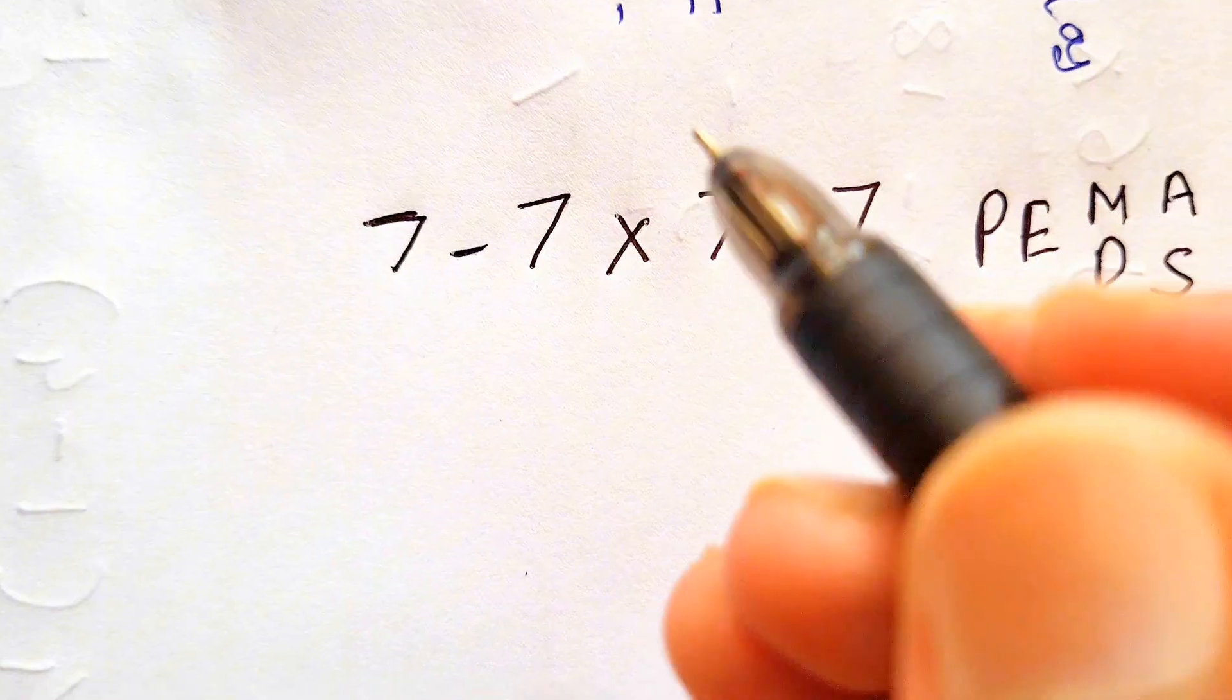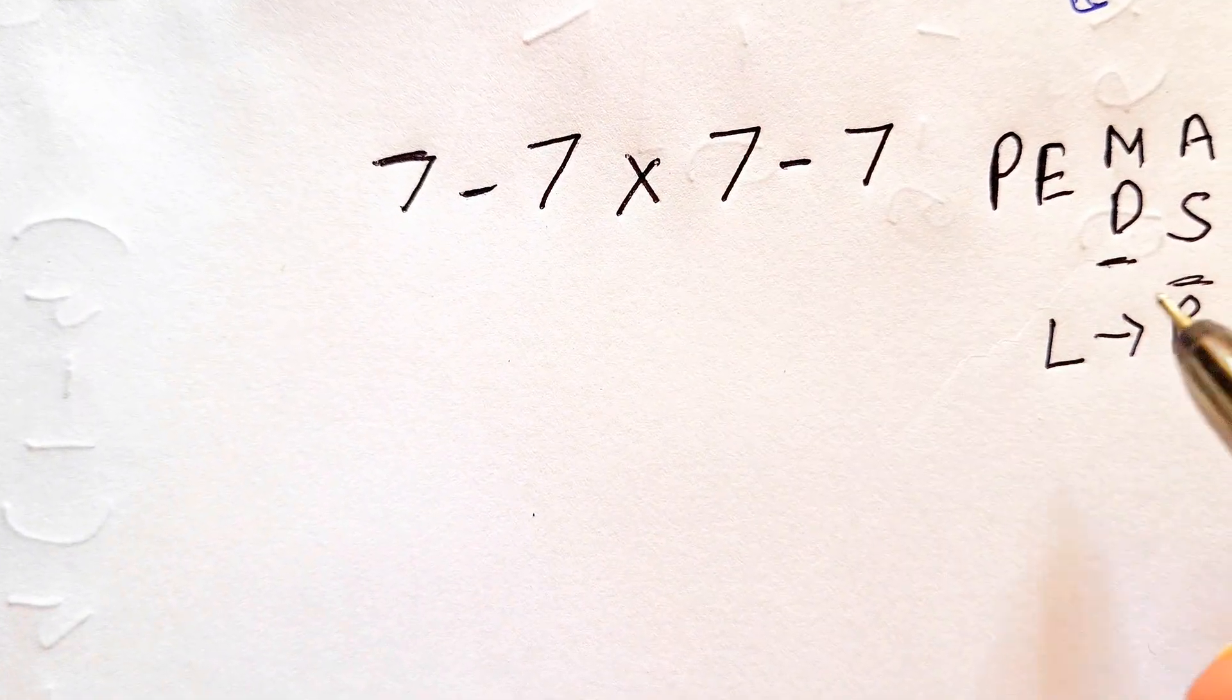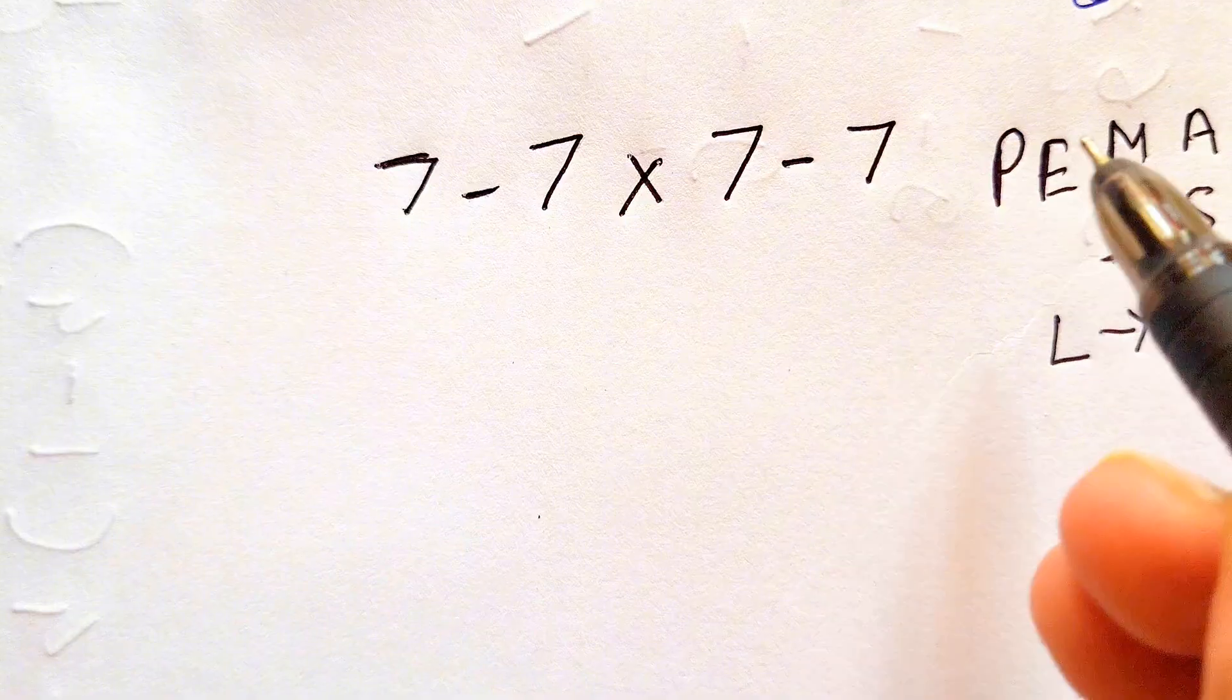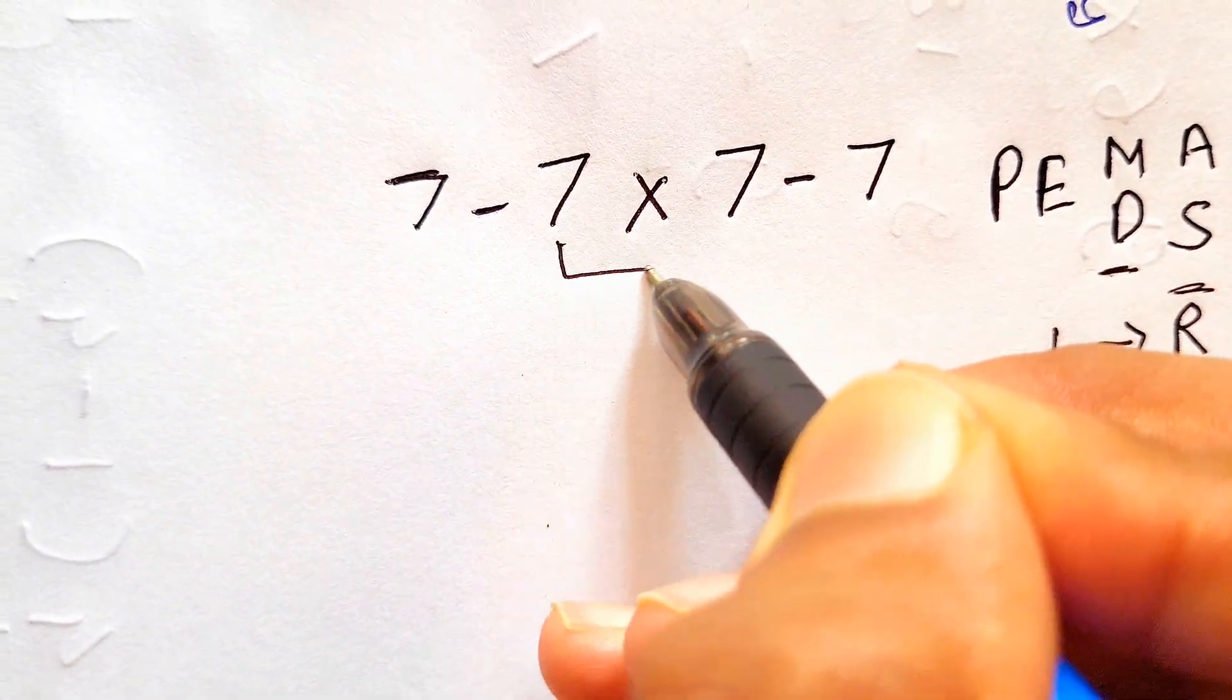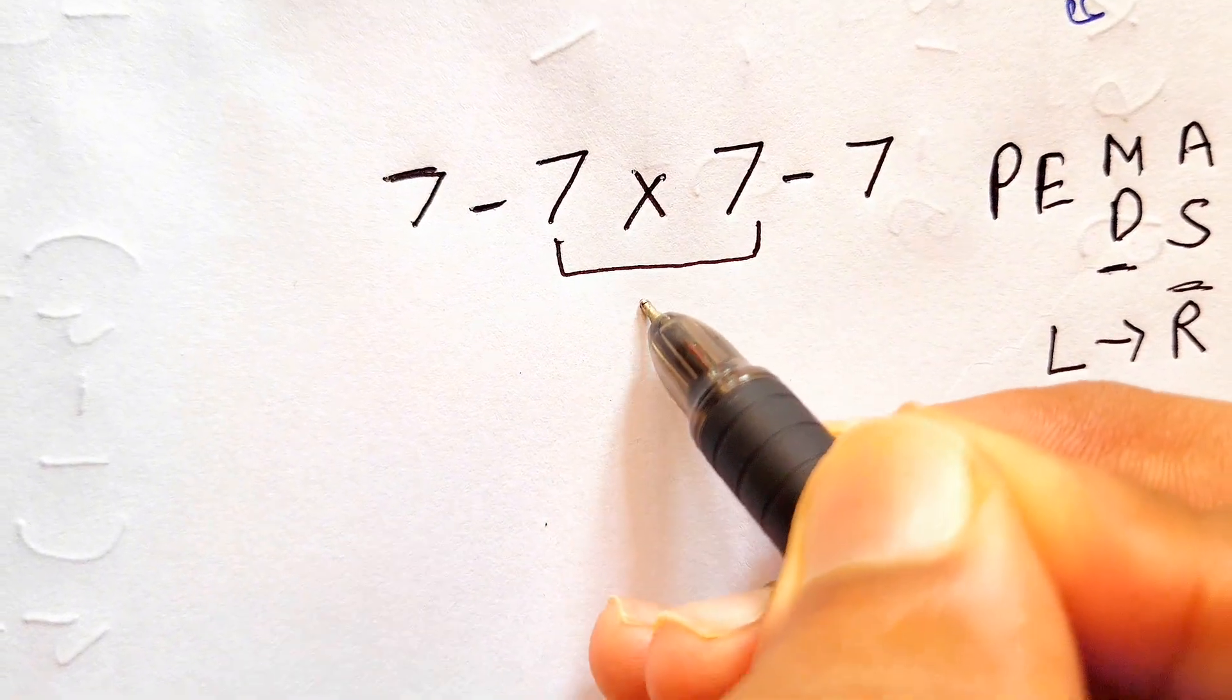In which the priority of multiplication and division is same, addition and subtraction is same, but we need to go from left to right. As we can see in this expression, there is multiplication and subtraction, so the priority of multiplication is greater than subtraction. So first we'll solve the 7 times 7, that is 49.